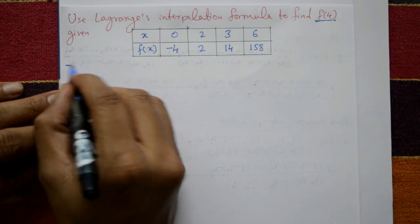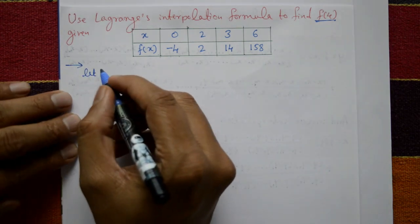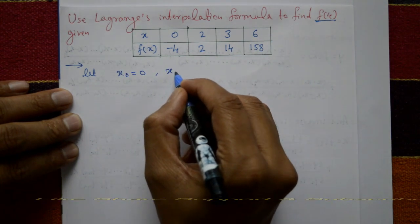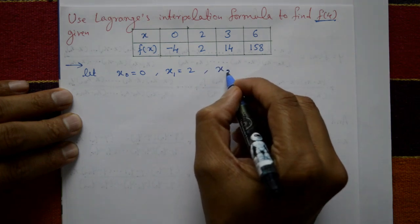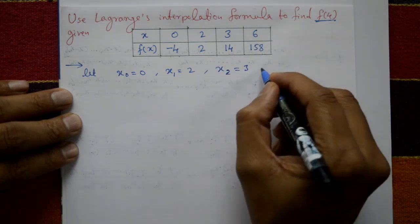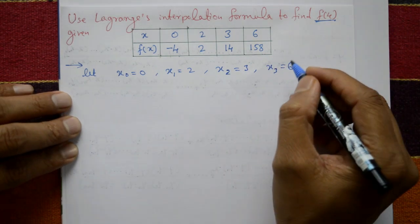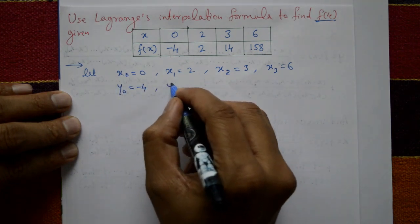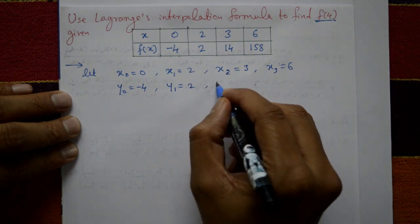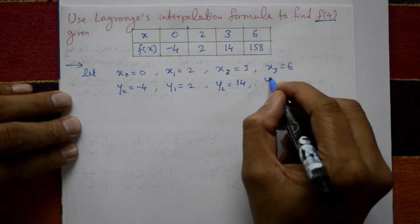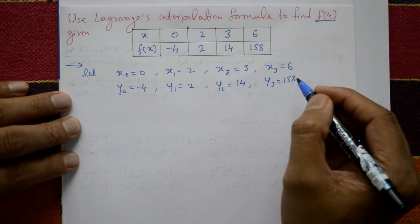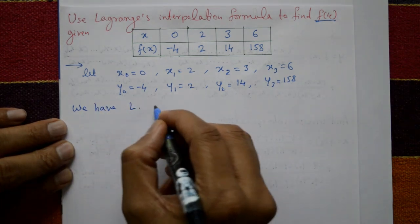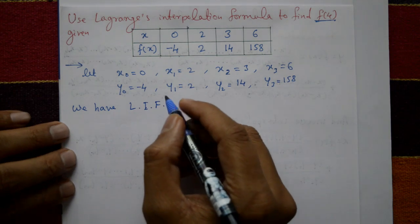Now for the solution, let x₀ = 0, x₁ = 2, x₂ = 3, and x₃ = 6. The corresponding y values are: y₀ = −4, y₁ = 2, y₂ = 14, and y₃ = 158. Now we apply Lagrange's interpolation formula.